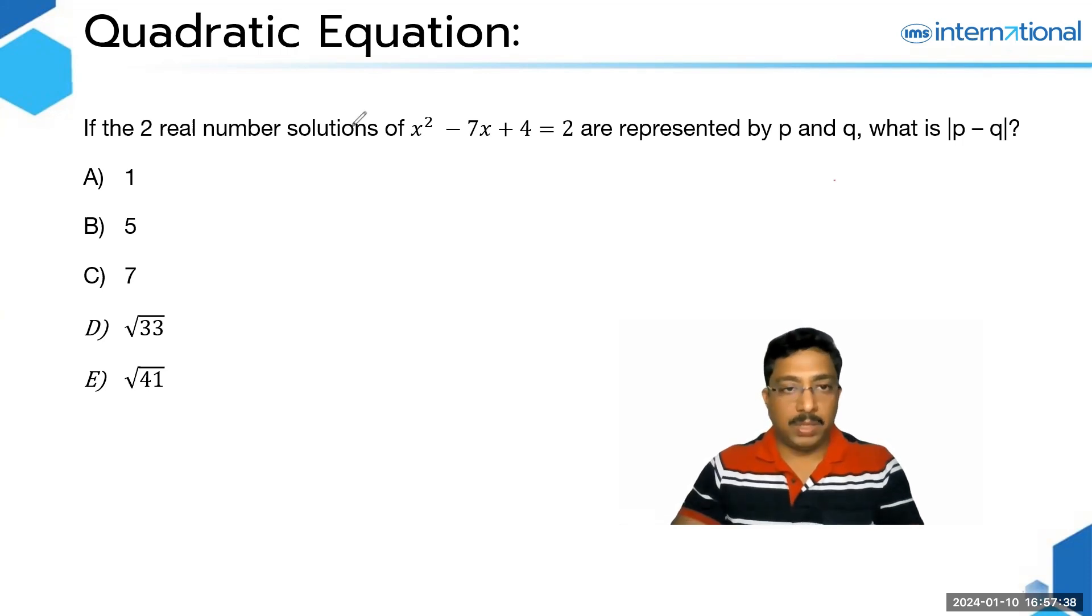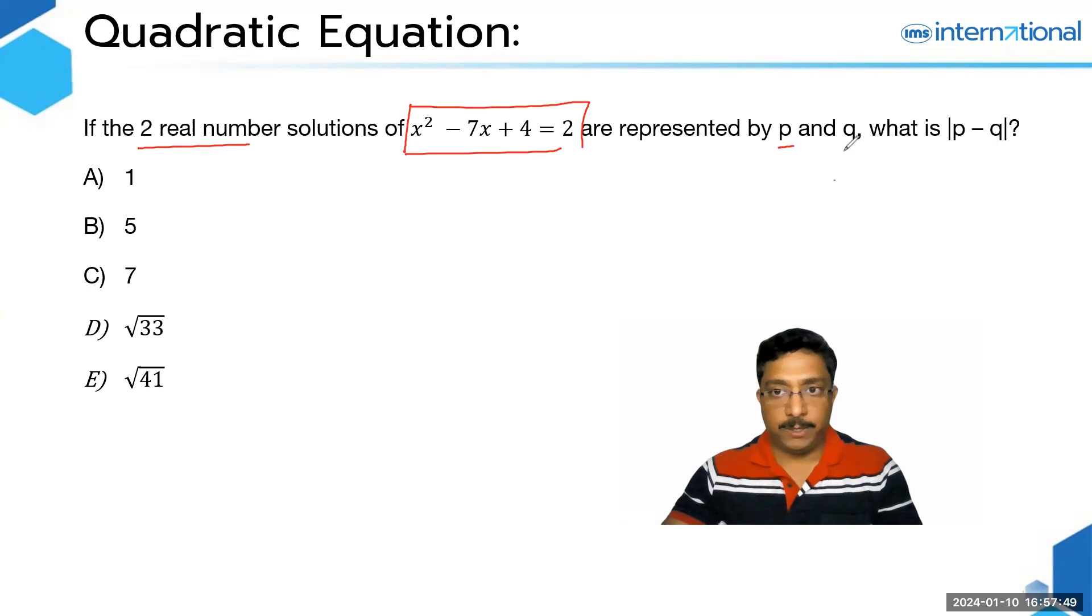Now coming to this question, here we're given that if there are two real number solutions to this quadratic equation which are represented as P and Q, what is |P - Q|?